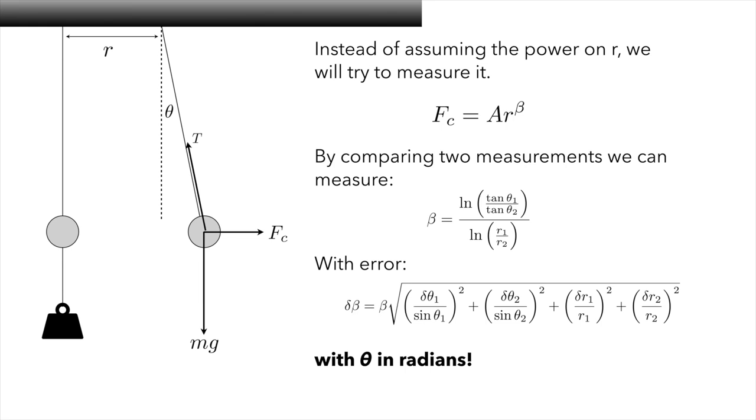So go ahead, use your data, and try to measure what beta and its uncertainty is and compare to the theoretical measure of beta equals negative 2.